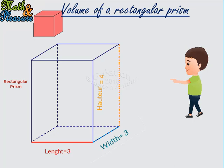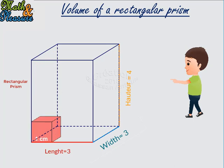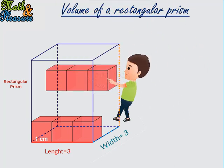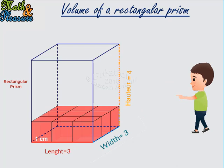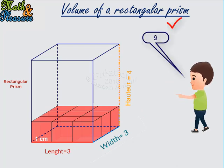The centimeter cube is a cube in which each side measures one centimeter. It's used as a volumetric unit. Let's fill the prism with adjacent centimeter cubes. How many centimeter cubes did you use till now? Very good, nine. Where does this number come from?